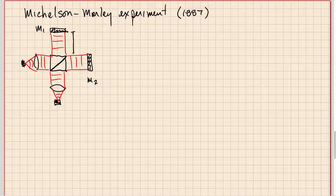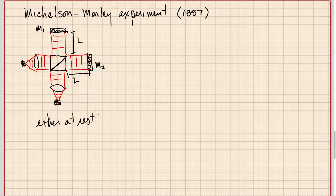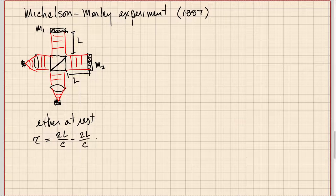In the Michelson-Morley interferometer the two arms had the same fixed length L. If the ether was at rest with respect to the interferometer, the round-trip time for each arm would be 2L over c, so the relative time difference would be zero and you would get no interference fringes.